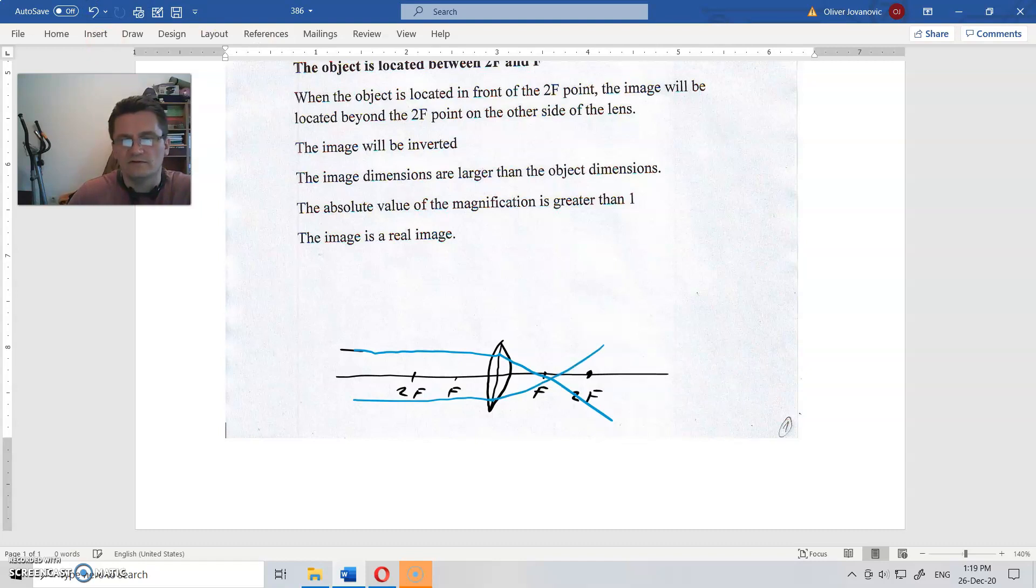This one will go to the focal point also. That is the meaning of the converging lens. Now how do you draw an image? The object is placed somewhere around here.